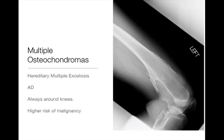Multiple osteochondromas is another polyostatic process. A single osteochondroma is just an outgrowth or exostosis off the bone — we can see continuity between the cortex and the underlying marrow, which allows us to confidently suggest the diagnosis. Multiple osteochondromas, or hereditary multiple exostosis, is much less common. We care about it because the risk of malignant degeneration is much higher than in a solitary osteochondroma — in the neighborhood of 100 to 1,000-fold more malignant risk than in a patient with just a single solitary osteochondroma.